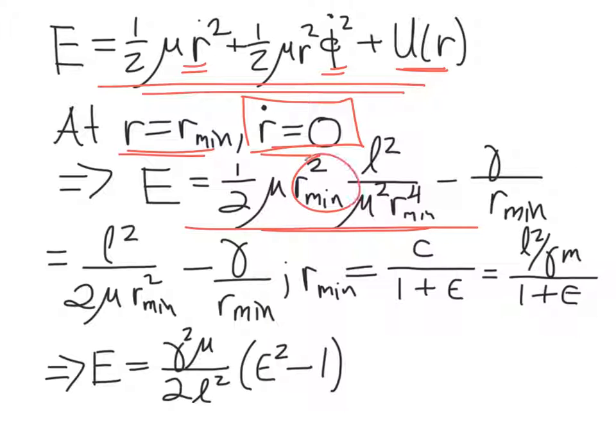And you can see we get a bunch of r min's in a lot of places. Here we've taken the potential energy associated with gravity, gamma over r. And so all of this equals this. So that tells us our energy is equal to this expression.